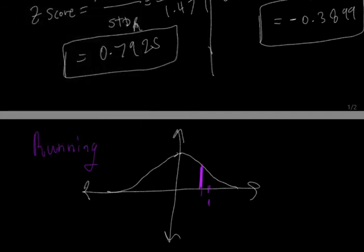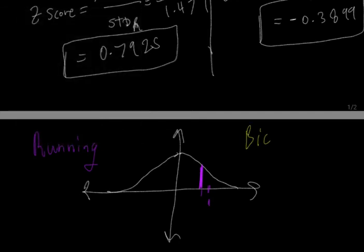But on the bicycling, your cousin falls about right here, minus 0.38.